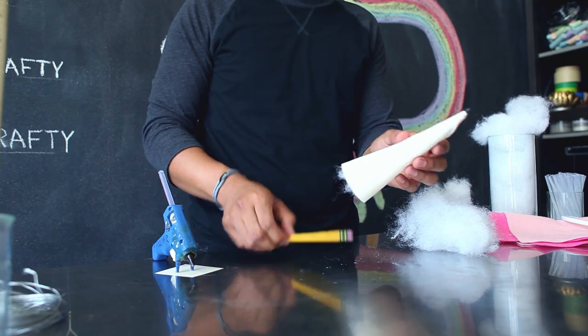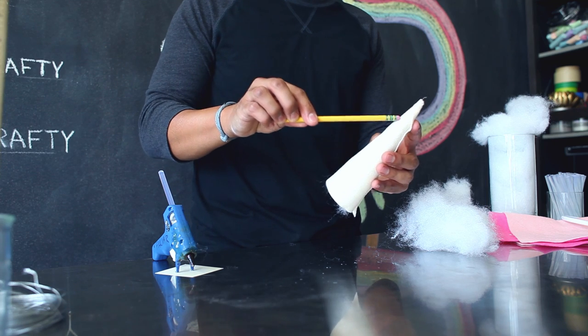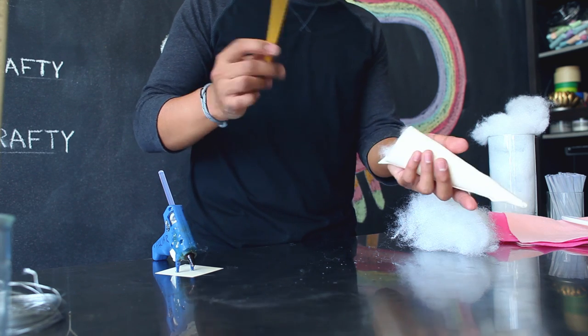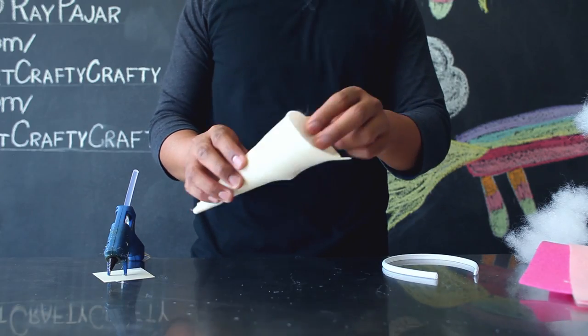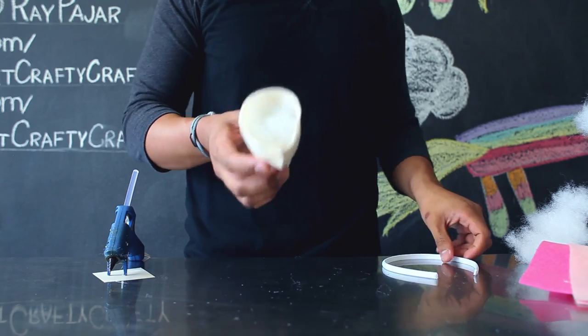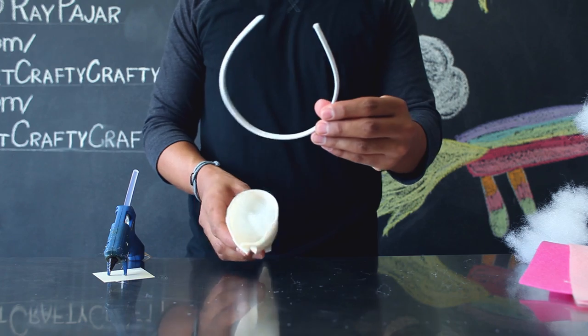Fill your unicorn horn with pillow stuffing. To make sure that you have enough pillow stuffing at the end of your horn, use a pencil or a chopstick to push it all the way in. After you've filled your horn up with enough pillow stuffing, you're going to attach it to your headband.